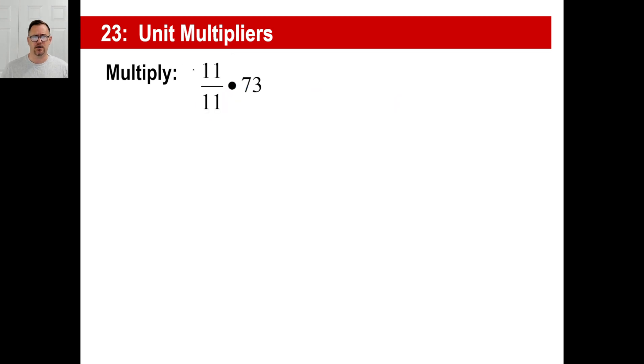Let's try this one. 11 over 11 times 73. 73, right? If you're multiplying some, whatever number this is, and you're multiplying it by a fraction that's equal to one, I mean, any number times itself is just the same number, right?